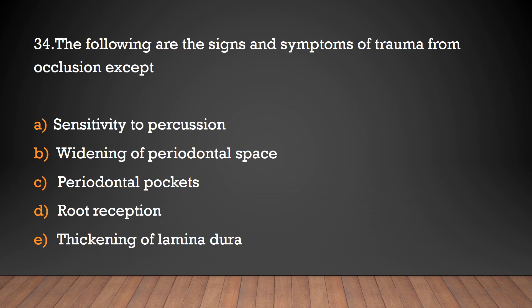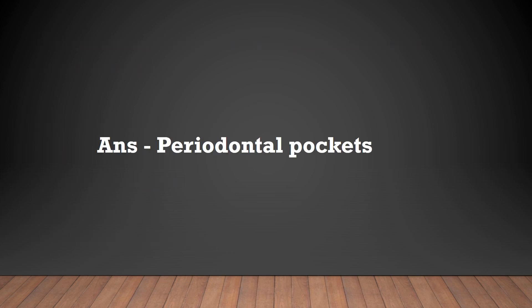The following are the signs and symptoms of trauma from occlusion except: sensitivity to percussion, widening of periodontal space, periodontal pockets, root resorption, thickening of lamina dura. The answer is periodontal pockets — periodontal pockets are not seen in trauma from occlusion.